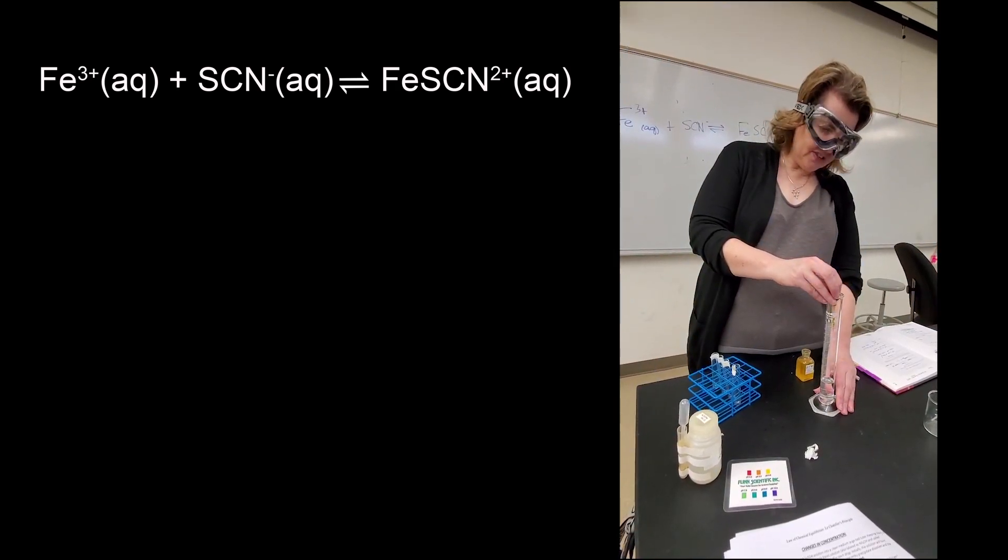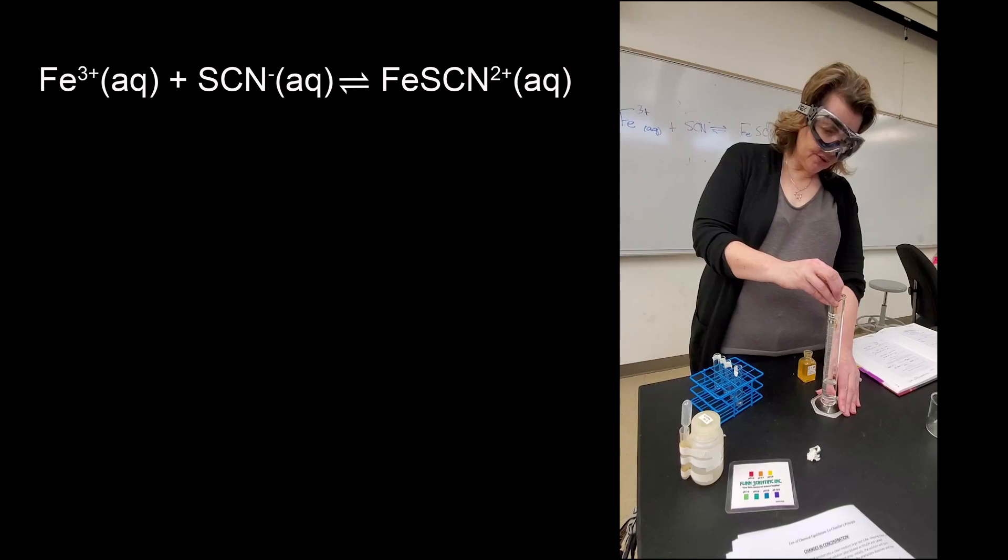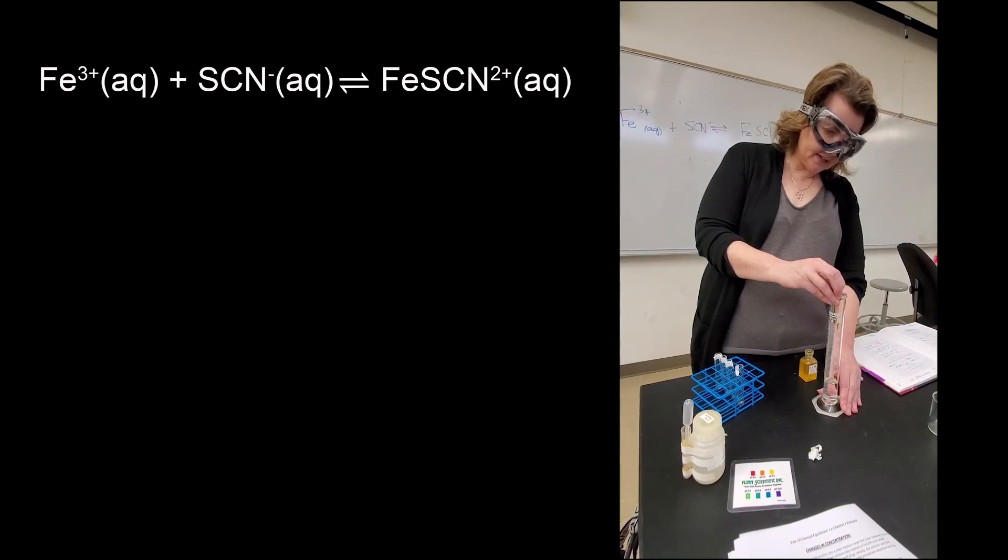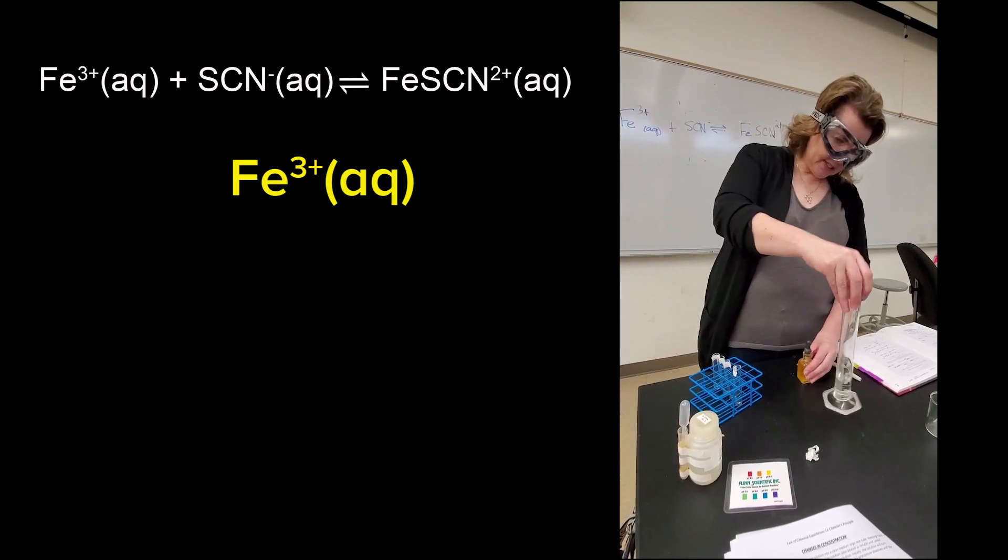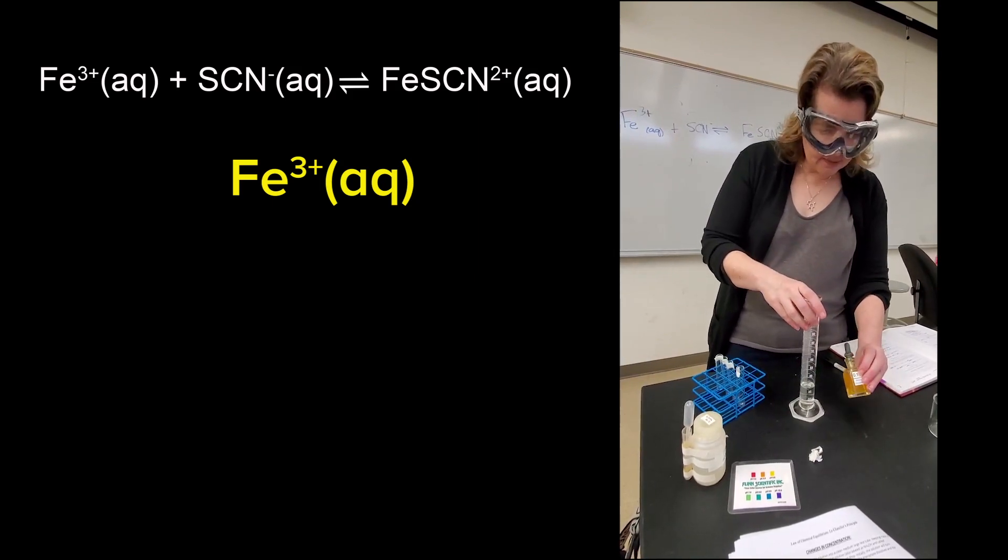This is the iron. So first of all, I want you to know that the color of this iron is yellow. One, two, three, four, five, six, seven, eight, nine, ten. Good enough. Very precise. Very precise.